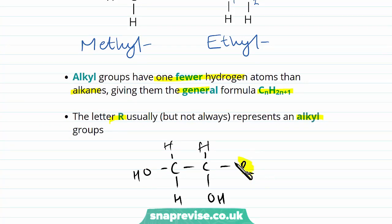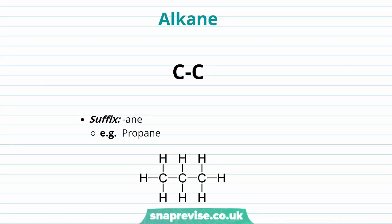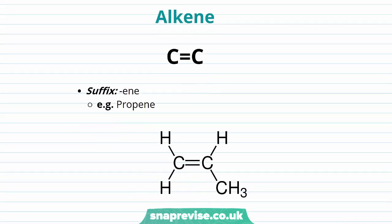This R group will represent an alkyl group. Alkanes contain only single carbon-to-carbon bonds and are named with the suffix '-ane'. Here our compound has three carbons, so the stem is 'prop' and the name is propane. Looking at our alkenes — they contain double carbon-to-carbon bonds and are unsaturated. We name our alkenes with the suffix '-ene'. Here we have an alkene with three carbons, so the stem is 'prop' and the name of this compound is propene.